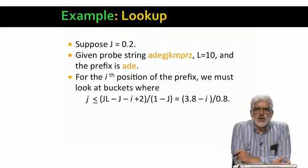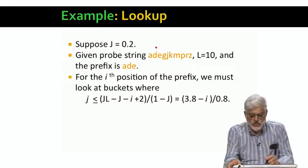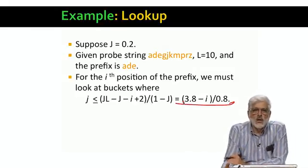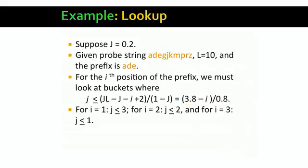Here's the upper bound on J, the positions in the buckets in which we have to look for a given i. Since we know everything but i, we simplify the expression to this.